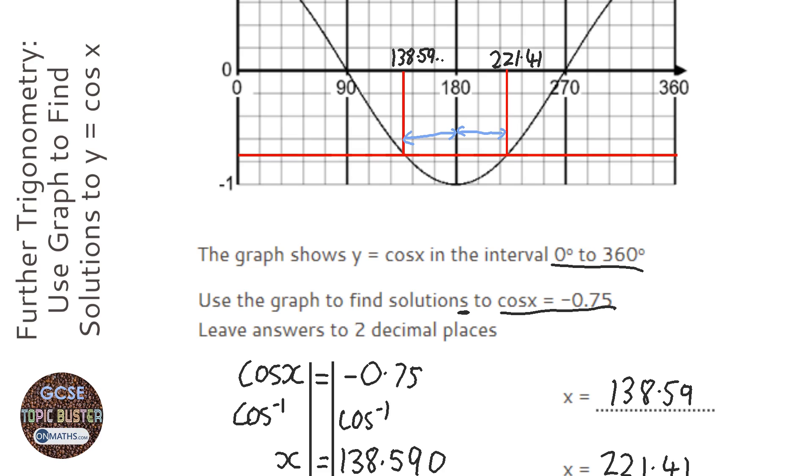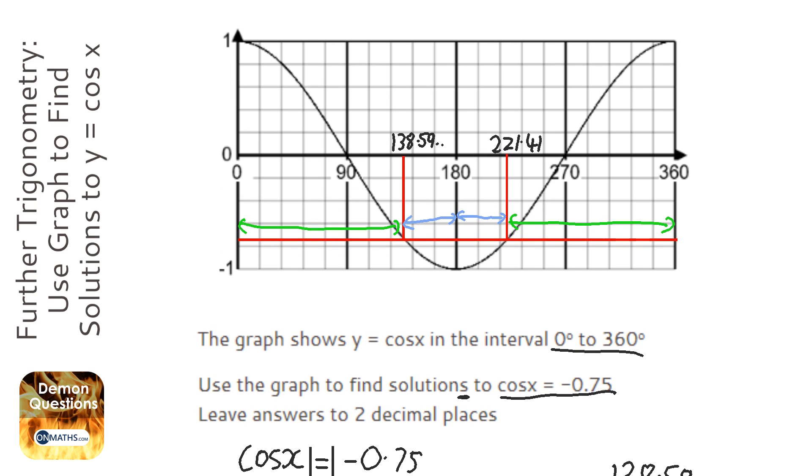So what I've done there, it doesn't matter which way around you do this, I've just noticed that that length is the same as that distance there, so I've taken it away from 360. As I said, there's multiple ways of doing it, just use the symmetry of the graph.